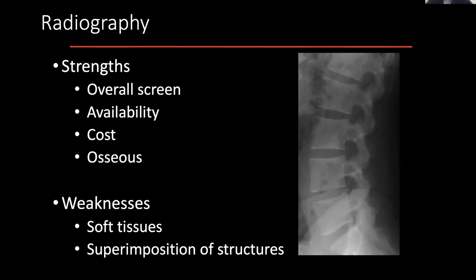Obviously we don't see soft tissue very well on plain film. It is a composite image — you're taking a large volume of tissue and forming a single image out of that large dataset. Because of that, superimposition of structures can make seeing things quite difficult, as you have overlying bowel, for example.